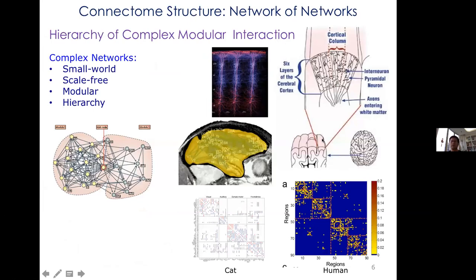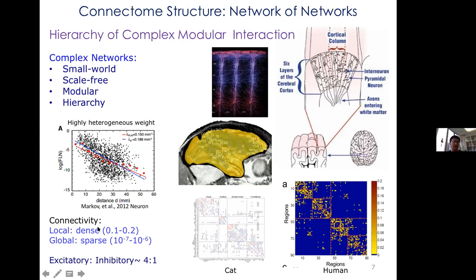At a larger scale, the whole brain can be divided into functional subsystems — visual, auditory, somatosensory — each with different functional areas. White matter fibers link different brain areas in a densely connected pattern within functional areas. Locally, connectivity density is about twenty percent at the millimeter scale, but globally the connectivity is very sparse: one hundred billion neurons each with only about ten thousand connections.